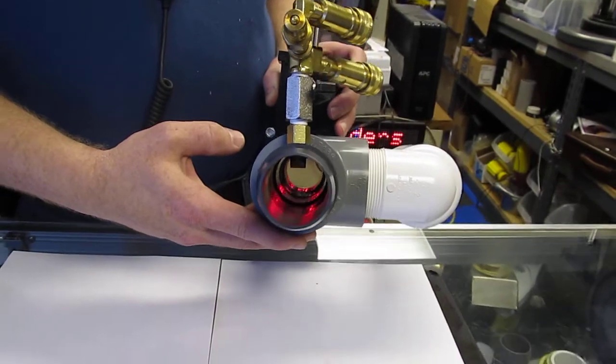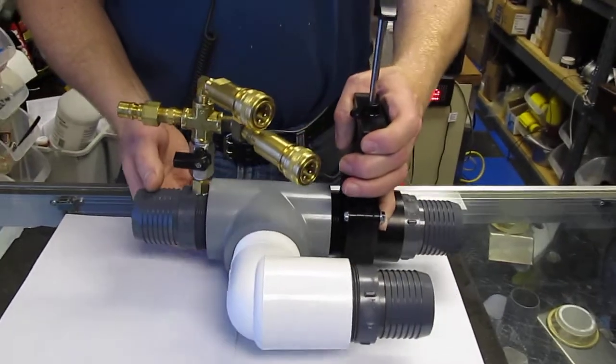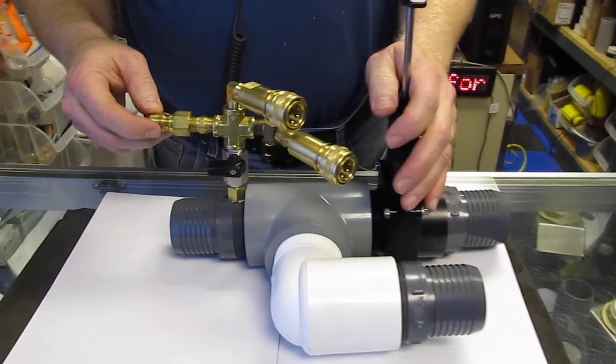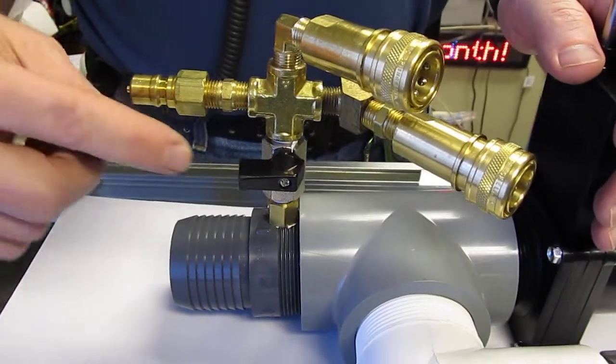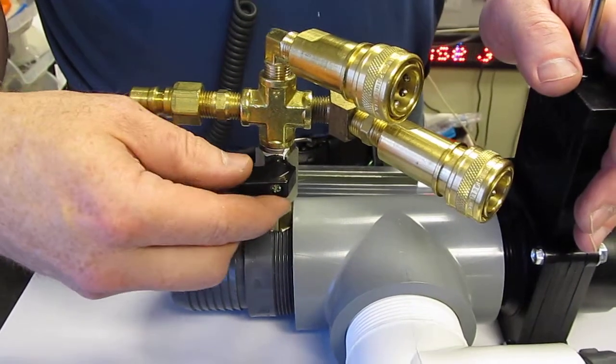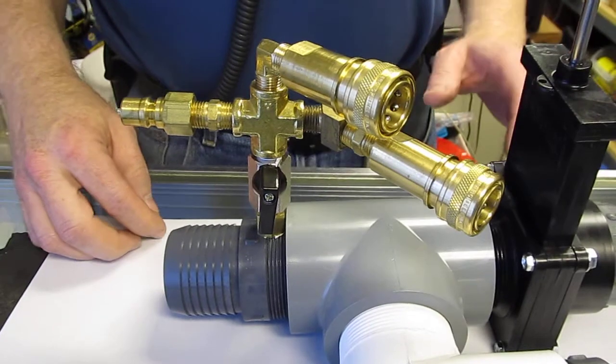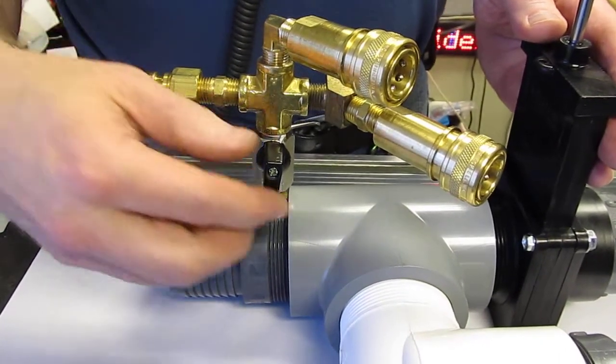Most truck-mounted carpet and auto detail machines don't have the ability to separate dry dirt from water and air, so applying water during dry vacuuming is helpful. There's a ball valve here - when you're doing dry vacuuming, you turn the water on, and if you're just doing extraction or auto detailing, you can turn it off.